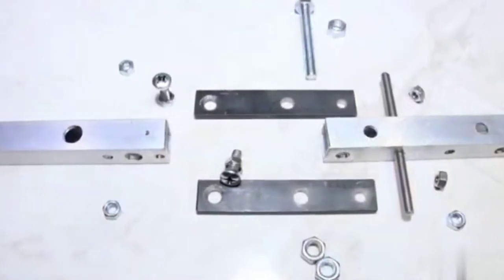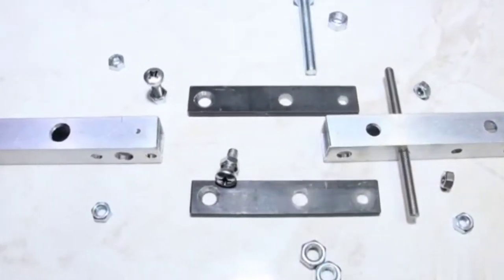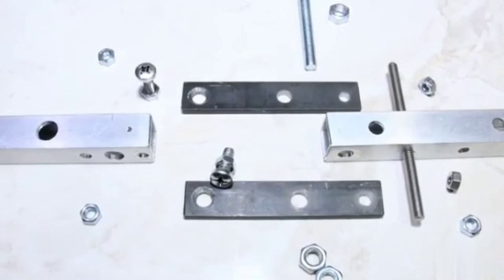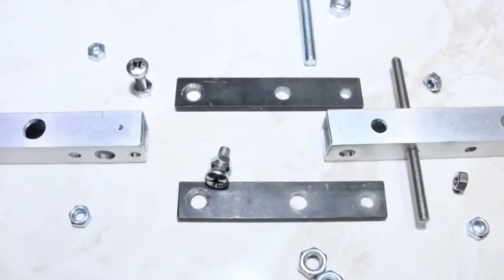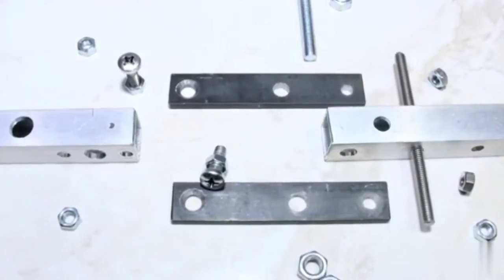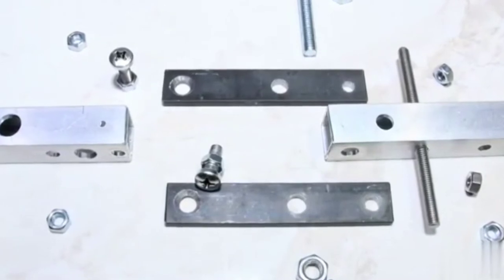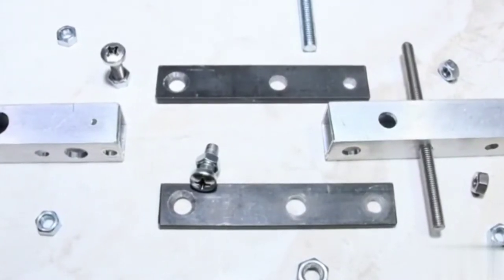The basic construction principle of the joints can be seen here. The core elements are screws with round heads and flat iron bars with countersunk holes. Both construction elements are each attached to an aluminum square tube.